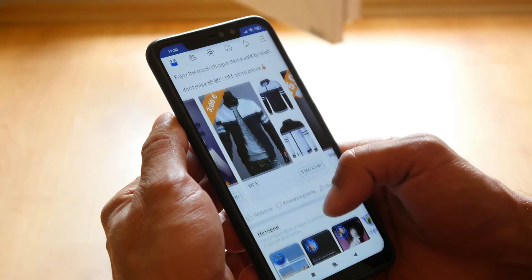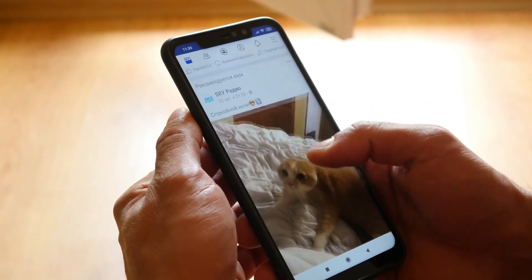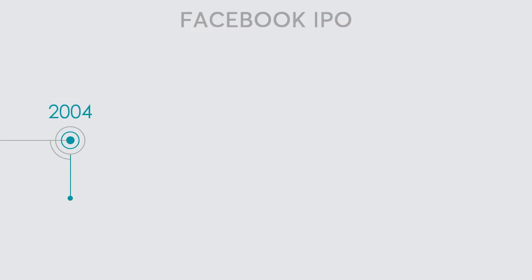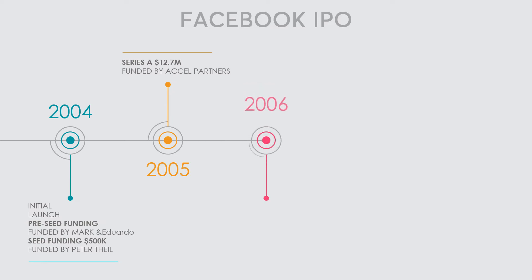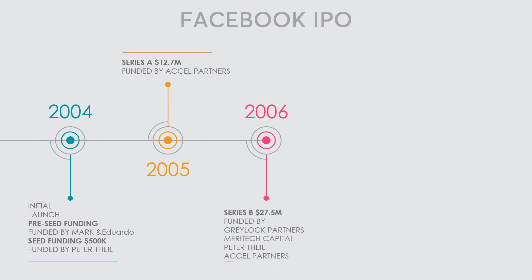To put everything we have discussed so far into perspective, let's consider Facebook's evolution from a startup to a publicly traded company. Facebook was initially launched in 2004 during the pre-seed funding stage, with funds coming from founders Mark Zuckerberg and Eduardo Saverin. Seed funding came from Peter Thiel in 2004, from which Facebook raised half a million dollars. One year later in 2005, through Series A funding, Facebook secured a venture capital investment of 12.7 million dollars from Accel Partners.